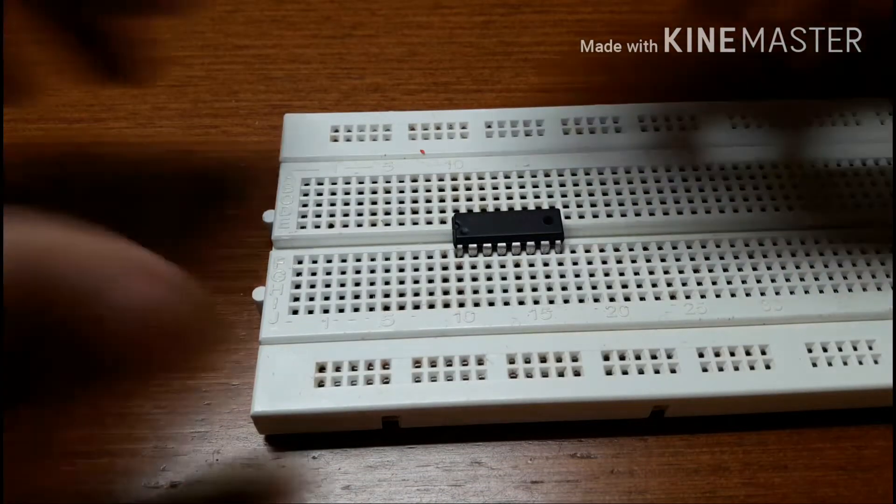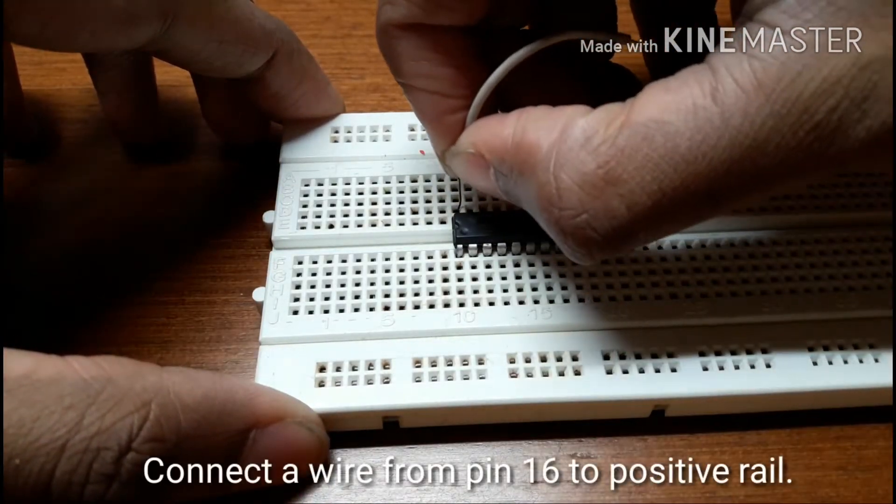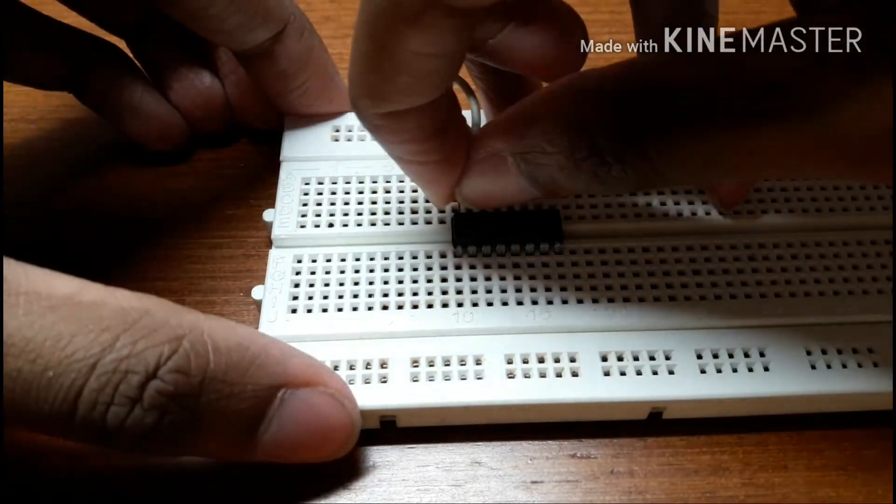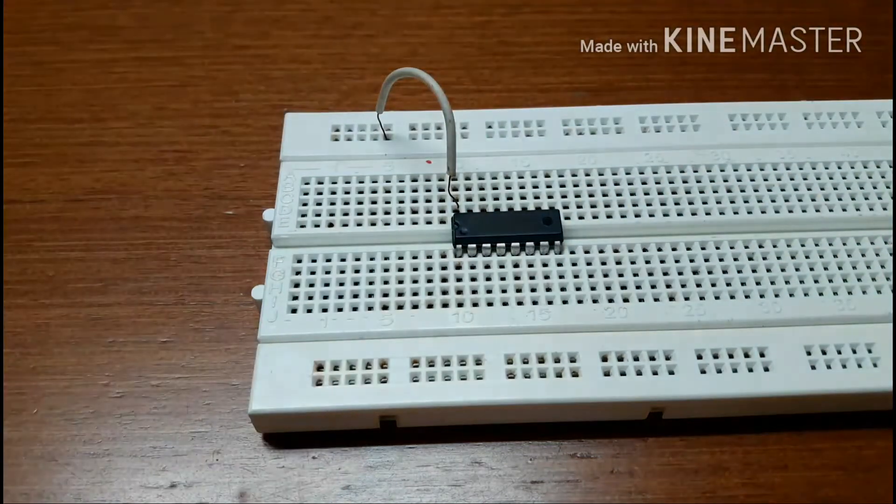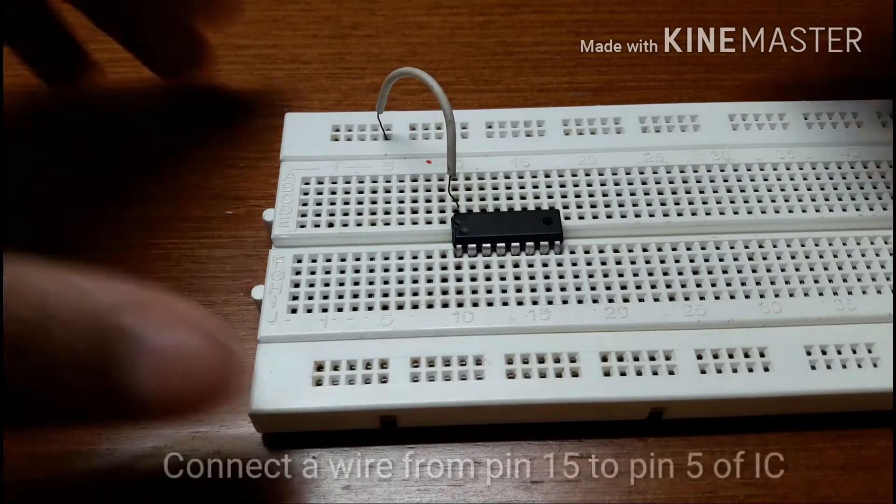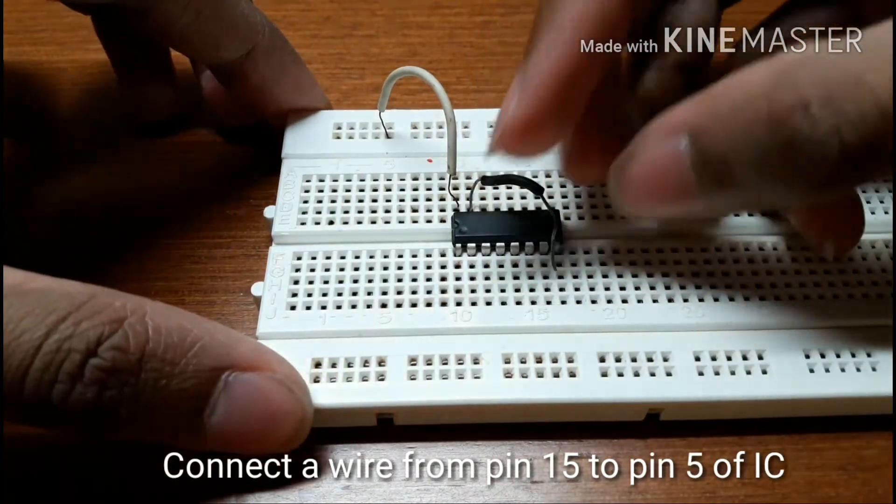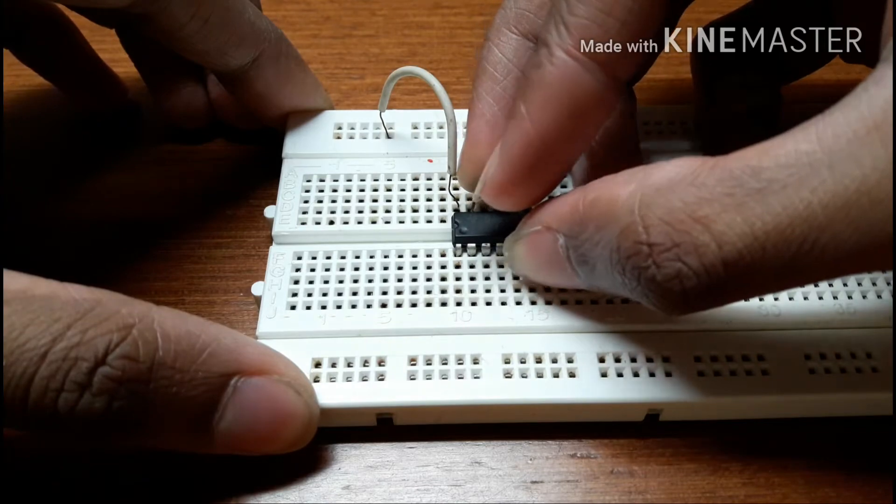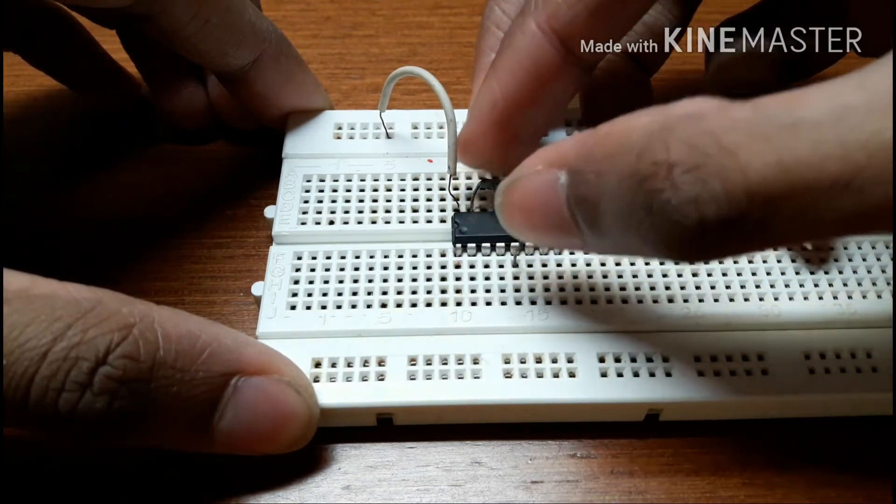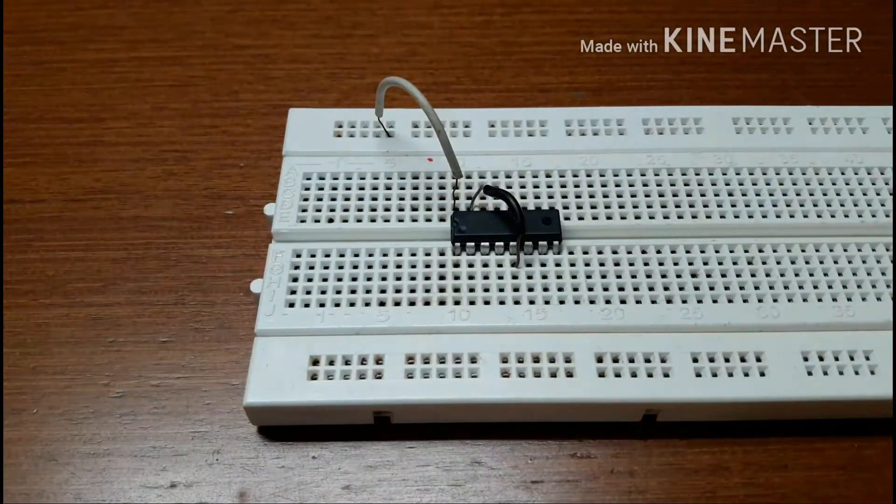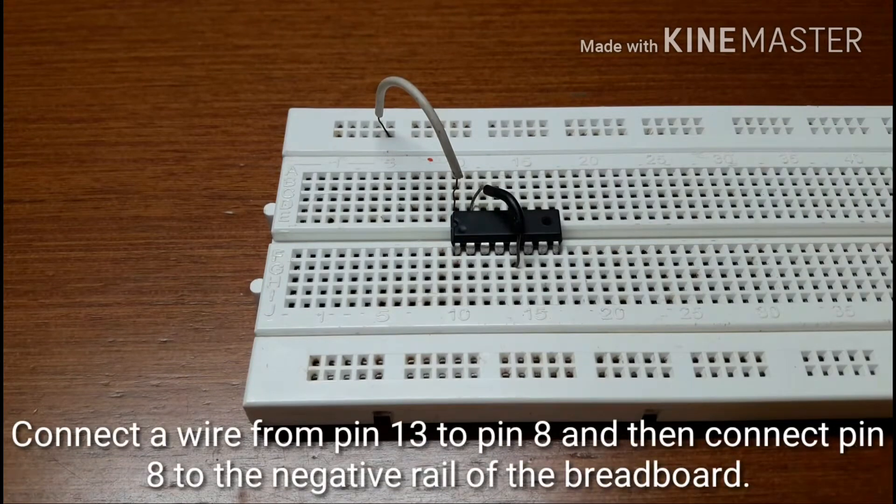First, connect a wire from pin 16 of IC to the positive rail of the breadboard. Then connect a wire from pin 15 to pin 5 of IC. Then connect pin 13 to pin 8, and pin 8 will go to the negative rail of the breadboard.